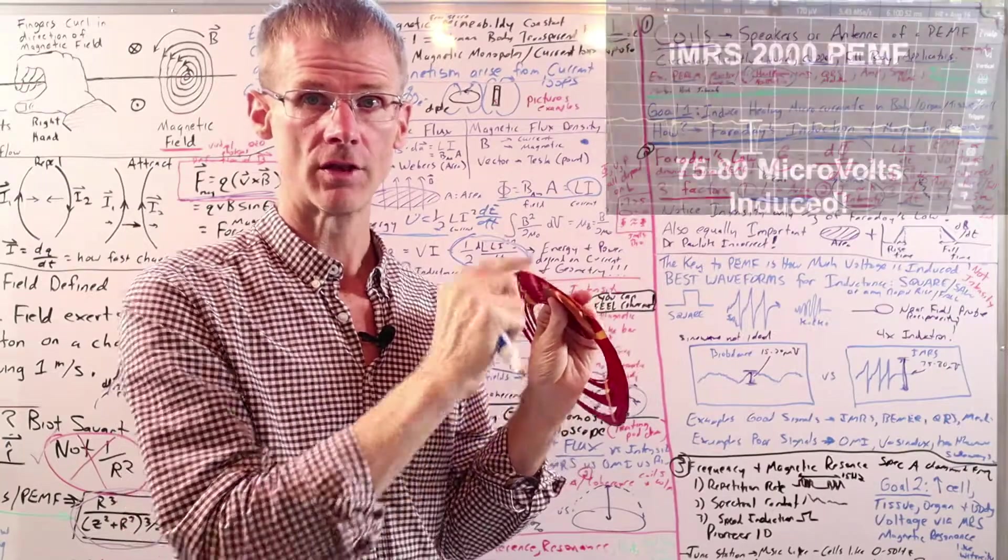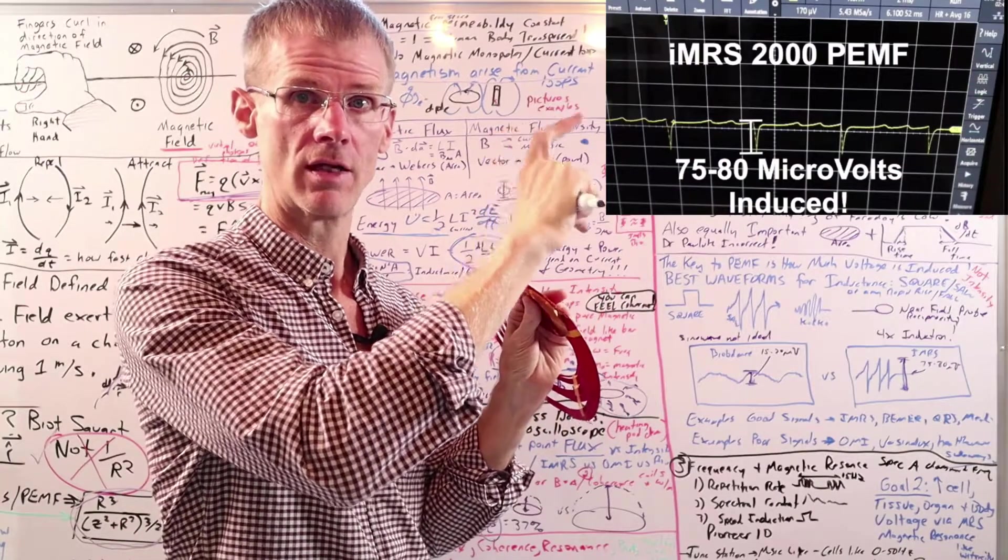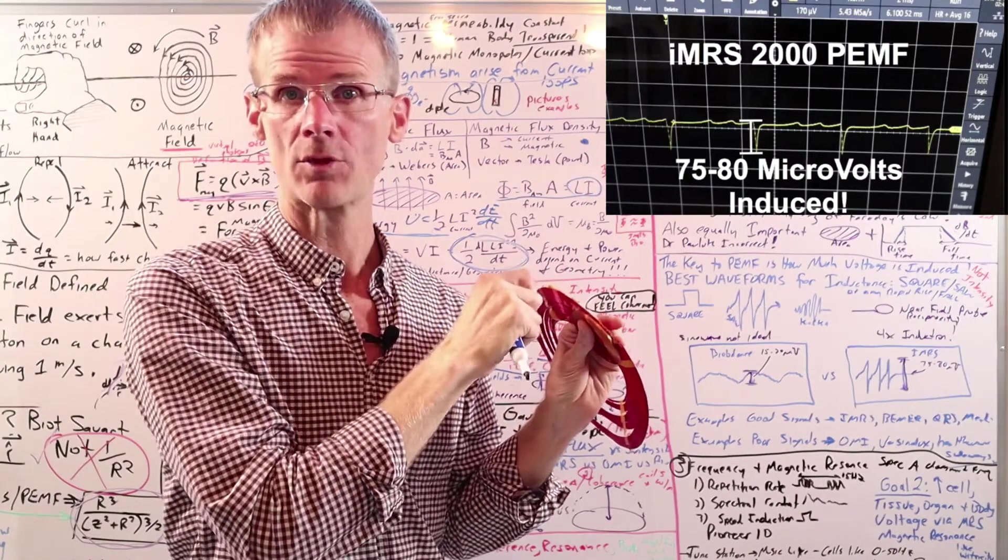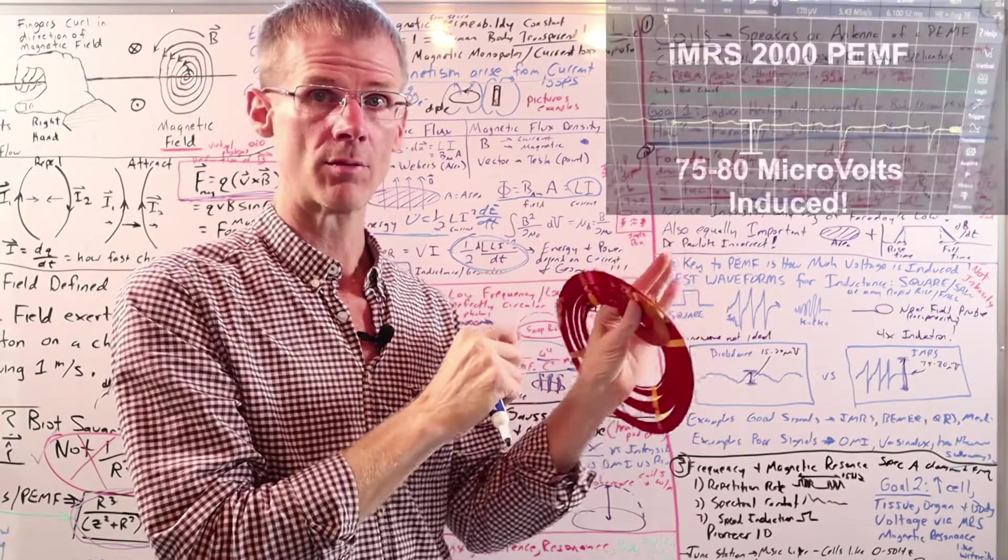The first is the IMRS here. Again, you can see the sawtooth. It's got a nice voltage like 75 to 80 microvolts induced in my near field probe, which is four times what the bio balance is doing. Another is the IMRS square wave. You can see that again, very nice induced voltage.